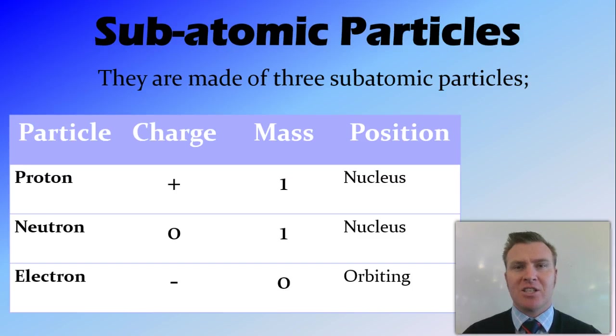Electrons are negatively charged, and they have a relative mass of zero, and they're found orbiting the nucleus.